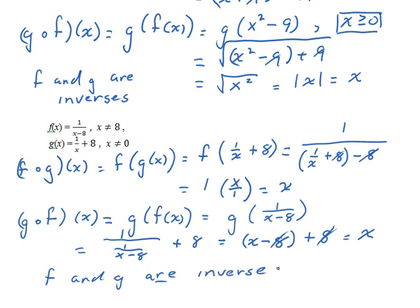You're certainly going to see examples where you are not given a pair of inverses to test using the inverse function property. Be aware that you haven't necessarily made a mistake if you do not get x in both cases — it just means that the pair of functions were not a pair of inverses.